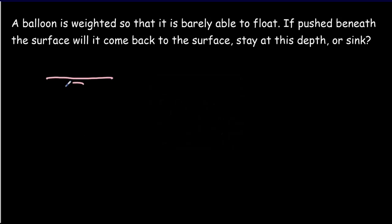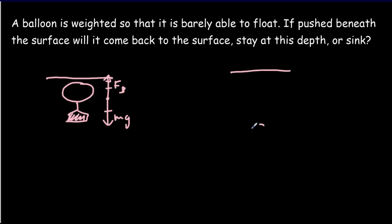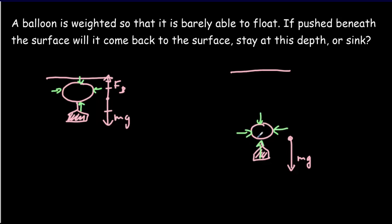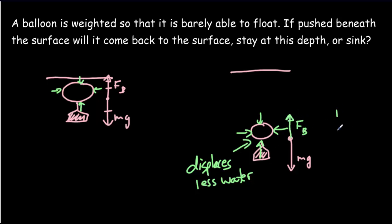Consider a balloon with a weight attached, barely floating underwater — the weight of the balloon plus the weight balances the buoyant force. If we push the balloon down farther, the weight stays the same, but the buoyant force decreases. Closer to the surface, pressure is lower; farther down, pressure is greater, compressing the air in the balloon. The balloon becomes smaller, displacing less water, giving a smaller buoyant force — so the balloon sinks.